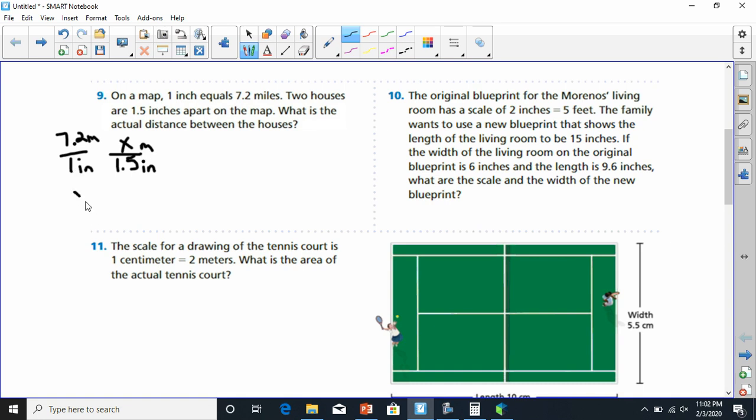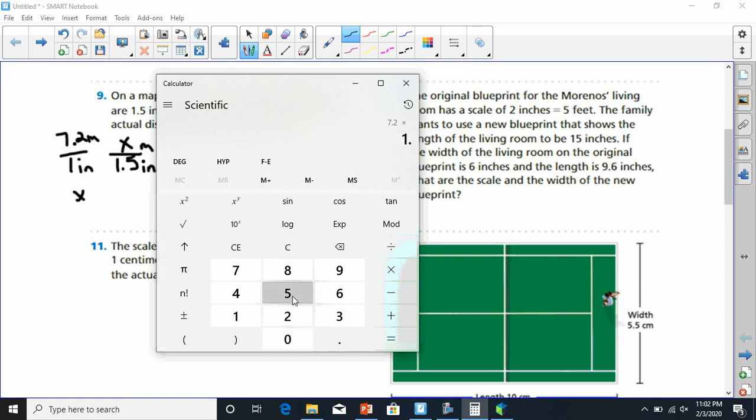Well, 1 times x is x. And 7.2 times 1.5, let's check that out in our calculator. 7.2 times 1.5 gives us 10.8.